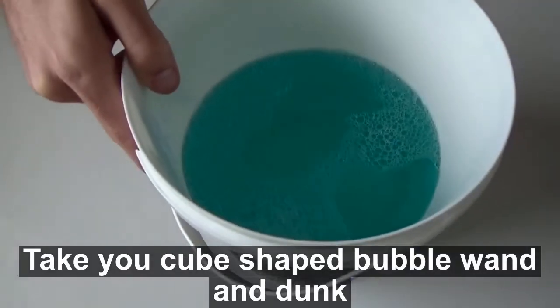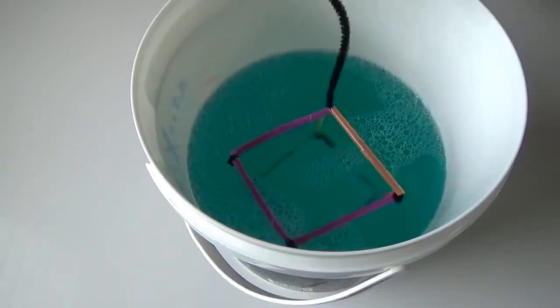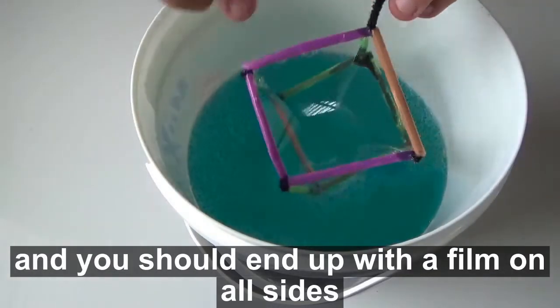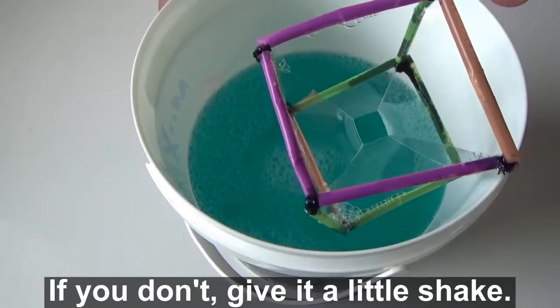Take your cube-shaped bubble wand and dunk it in your bubble solution. Make sure that all sides are covered. Carefully pull it out and you should end up with a film on all sides. If you don't, give it a little shake.